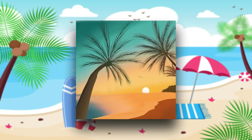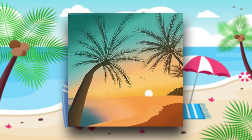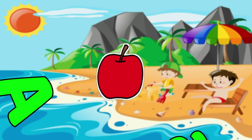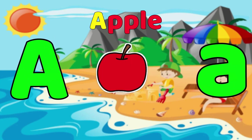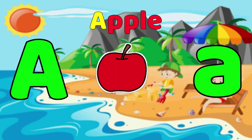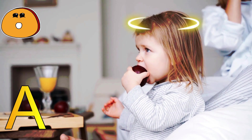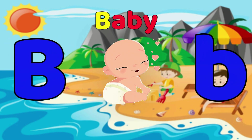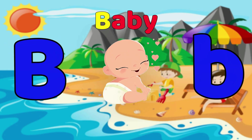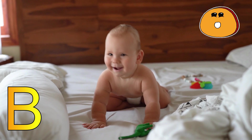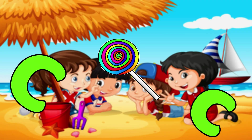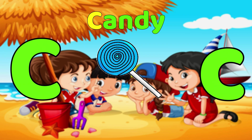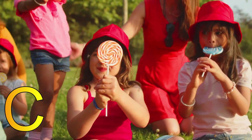Z-Zebra. A is for Apple. A-A-Apple, A-A-Apple. A-Apple. B is for Baby. B-B-Baby, B-B-Baby. B, Baby. C is for Candy. C-C-Candy, C-C-Candy. C, Candy.